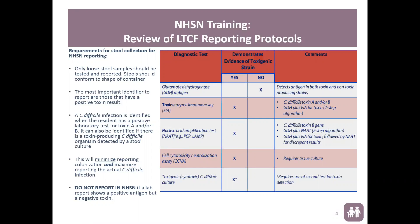The most important identifiers to report are those that have a positive toxin result. C. difficile infection is identified when the resident has a positive lab test for toxin A and/or toxin B. It can also be identified if there's a toxin-producing C. difficile organism detected by a stool culture. Do not report in NHSN if a lab report shows a positive antigen but a negative toxin.